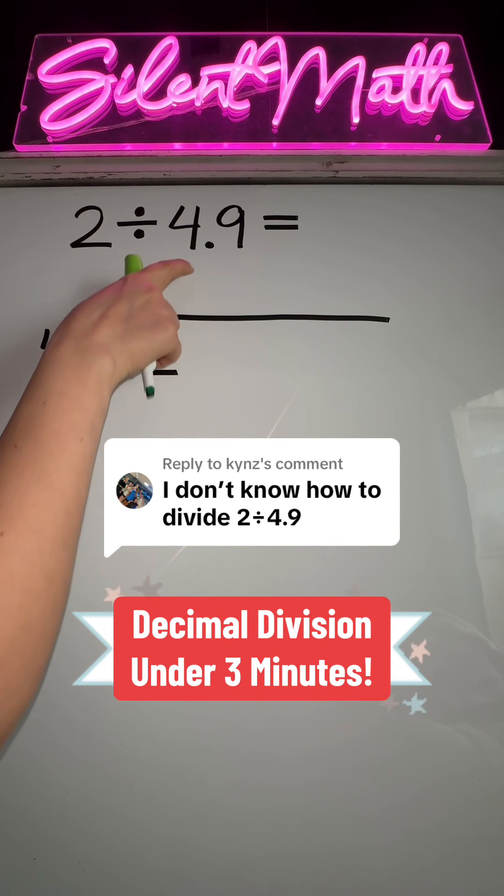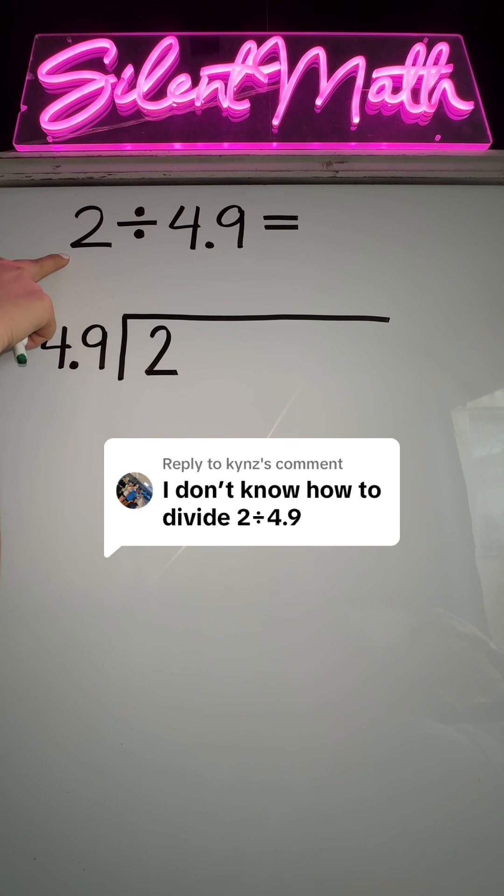When you are dividing with decimals, you want to make sure that the second number is a whole number. The first number always goes under this division box, and the second number goes on the outside. This is what we call your divisor.